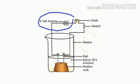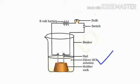Now pour dilute hydrochloric acid solution into the beaker and switch on the current. Repeat the same with different solutions that you have taken: sulfuric acid, glucose, and alcohol solution.